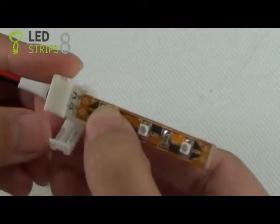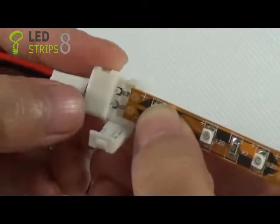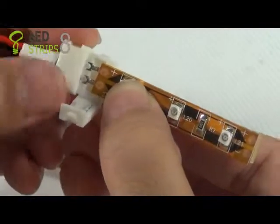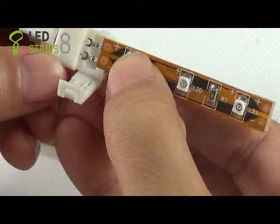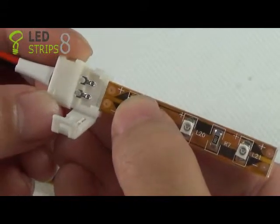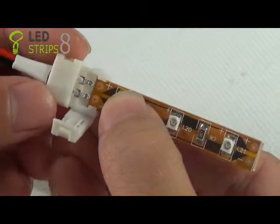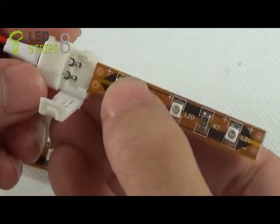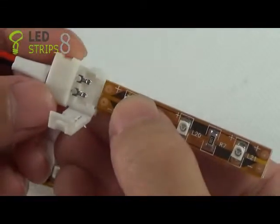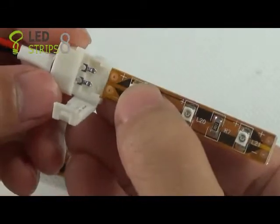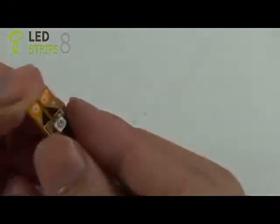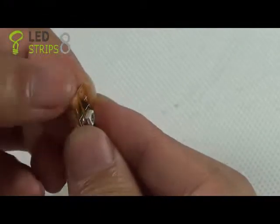Here we should know that there is positive and negative on both the snap-down connector and also the strip piece. So when we insert the strip piece into the connector, we should make the positive and negative poles on both match with each other. And before we insert the strip into the clip, we should peel off a little bit of the adhesive backing.